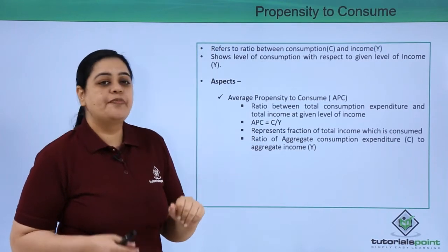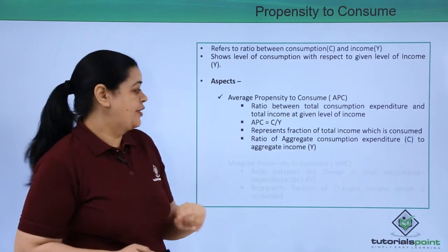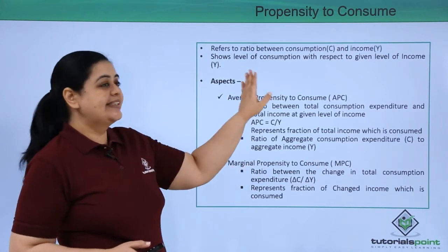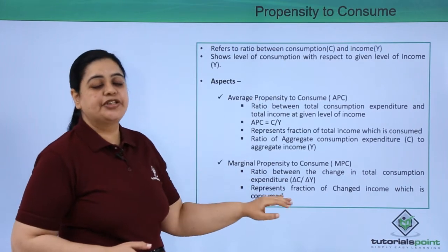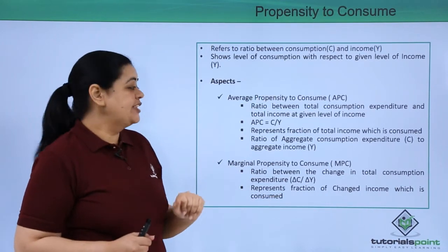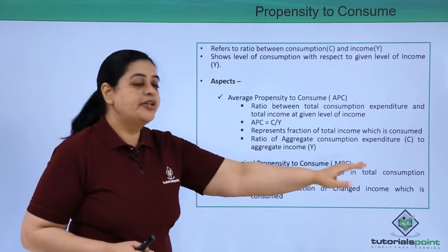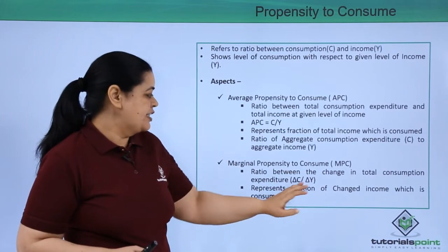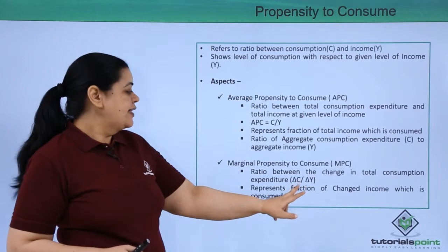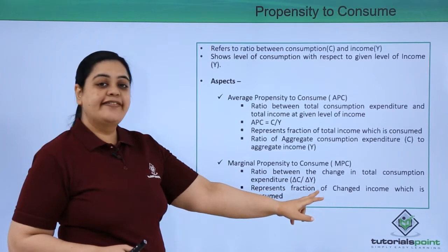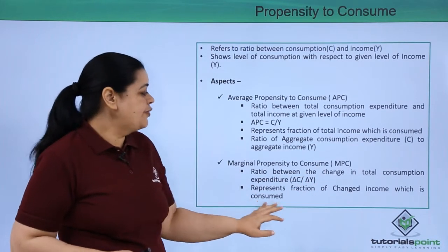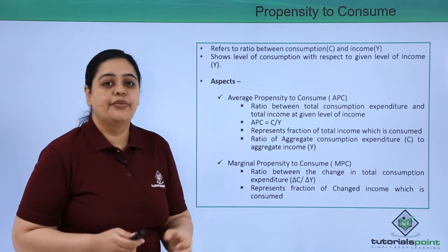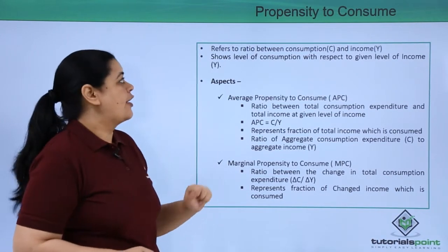The second aspect is marginal propensity to consume (MPC). This is the ratio between the change in total consumption expenditure and the change in income, shown as ΔC / ΔY. It represents the fraction of changed income which is consumed.